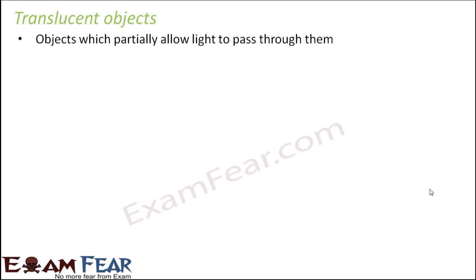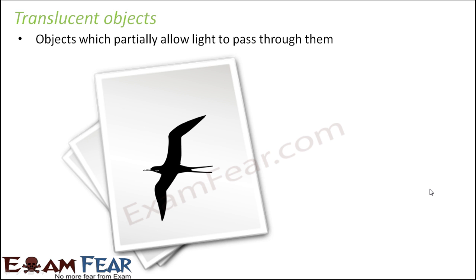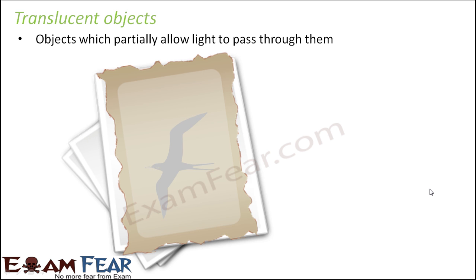The second type of objects are translucent objects. These objects partially allow light to pass through them — they allow some light to pass, but not completely. They block some part of it. For example, if you have a sheet of paper with a painting of a bird, an example of a translucent object would be a butter paper or a cellophane paper. When you put that paper over the sheet, you are still able to see the image of the bird, but it has become hazy and unclear. Light passes through this paper, but does not reach the image completely, so you only see an unclear image of the bird.